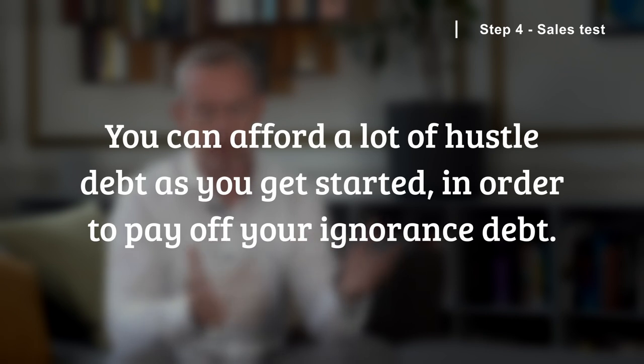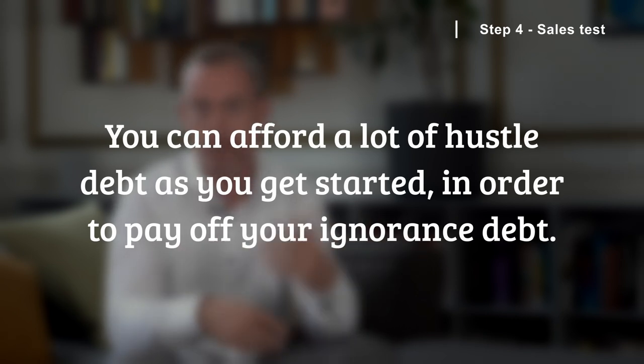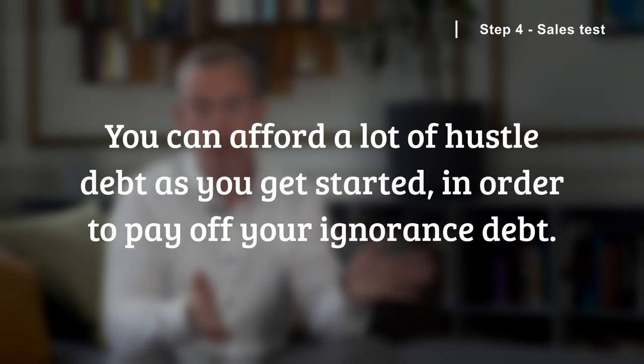You can afford a lot of what I call hustle or commercial debt — different models, different prices, different discounts — as you get started, in order to pay off your ignorance debt and learn what you need to learn. So when you have that start of a business at a million a year, you can create a model you know you can fire up, run a sales engine on, and take from 1 to 10 million and beyond. You shouldn't be creating 100 different deals with 100 different enterprise customers as you go from 1 to 20 million — that'll slow you down far too much.